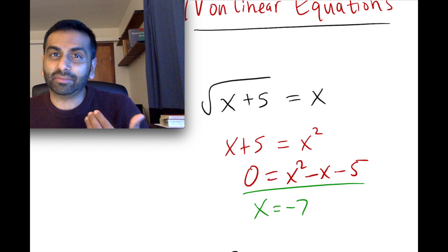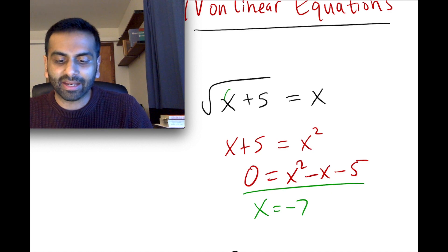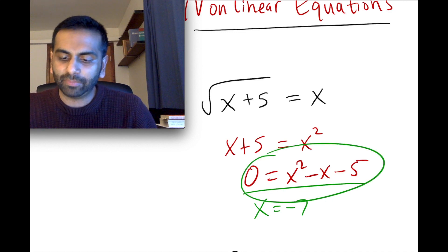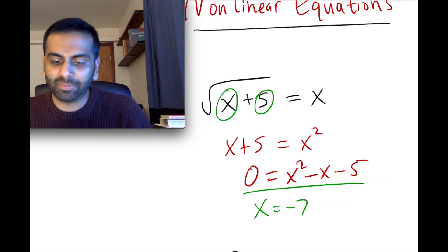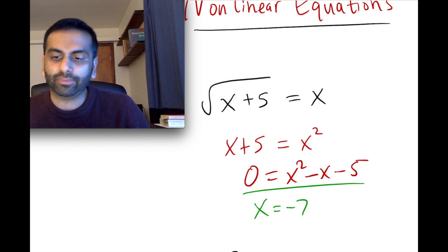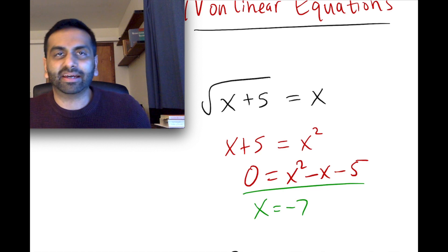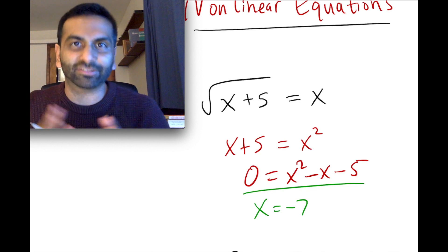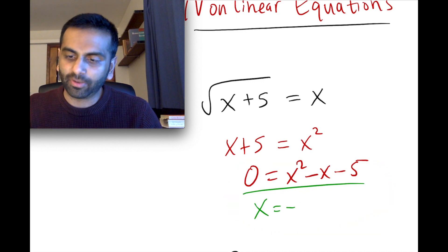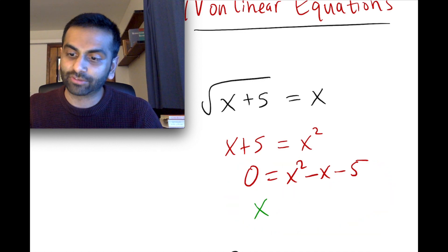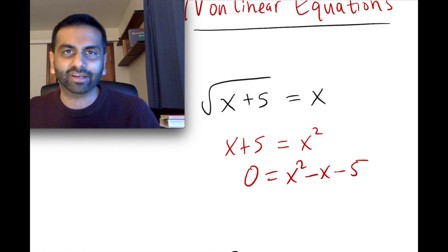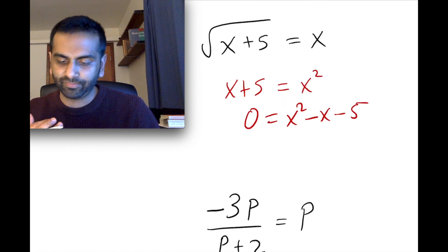That doesn't necessarily mean that that's a solution because when you actually plug a negative 7 back to the original, even though it might work here, if you plug it into the original, negative 7 plus 5 would be negative 2. And it's illegal to have a negative under the square root. So if you did get that, that means this negative 7 is what we call an extraneous solution. So even though it works for part of your problem onwards, it doesn't actually work for the original version of the question. So it's not an overall solution. So that's just the overall process for how you would do something like that.